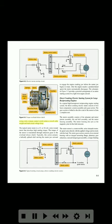Wiring with a remote control switch reduces overall cable weight and total circuit voltage drop. The typical starter motor is a 12- or 24-volt series wound motor that develops high starting torque. The torque of the motor is transmitted through reduction gears to the overload release clutch. Typically, this action actuates a helically splined shaft moving the starter jaw outward to engage the engine cranking jaw before the starter jaw begins to rotate. After the engine reaches a predetermined speed, the starter automatically disengages. The schematic in Figure 5-5 provides a pictorial arrangement of an entire starting system for a light twin engine aircraft.